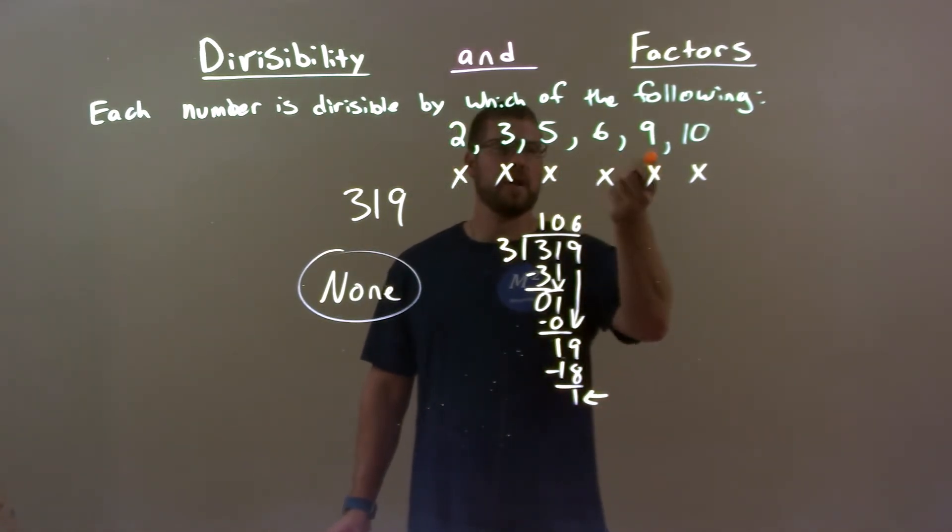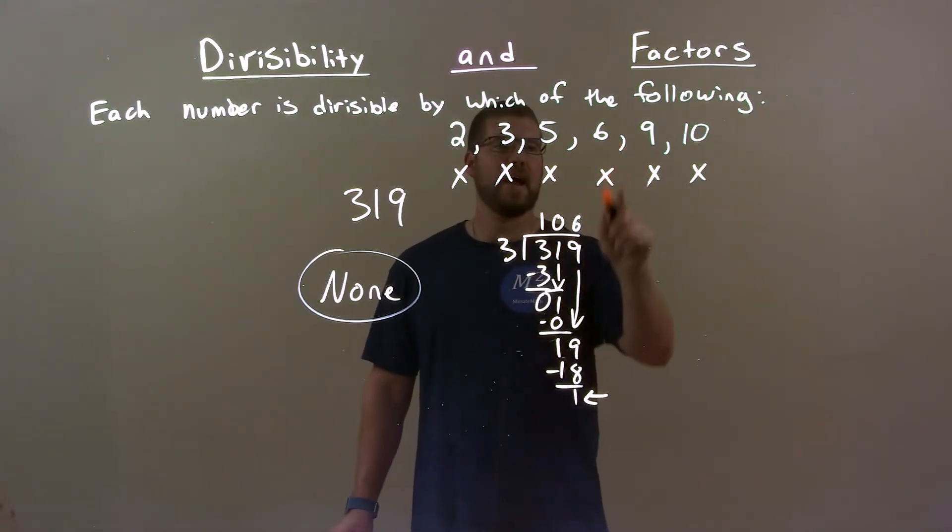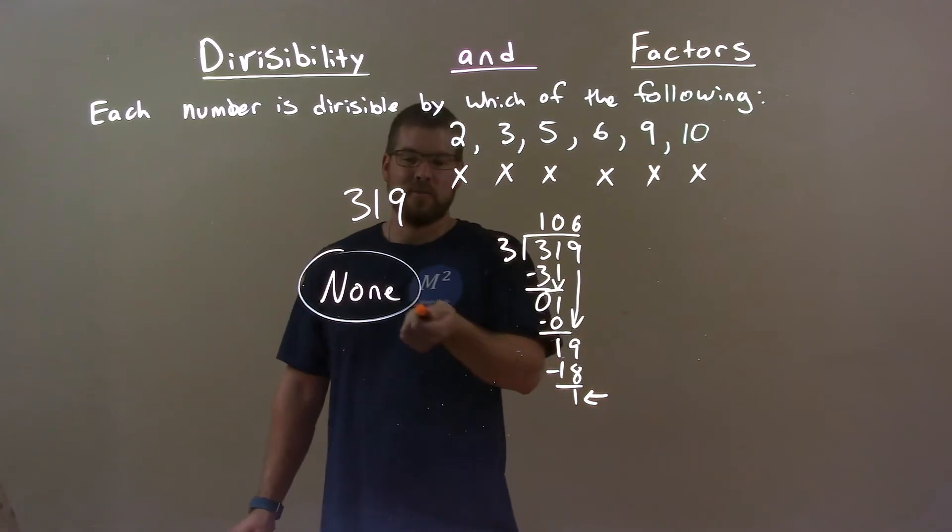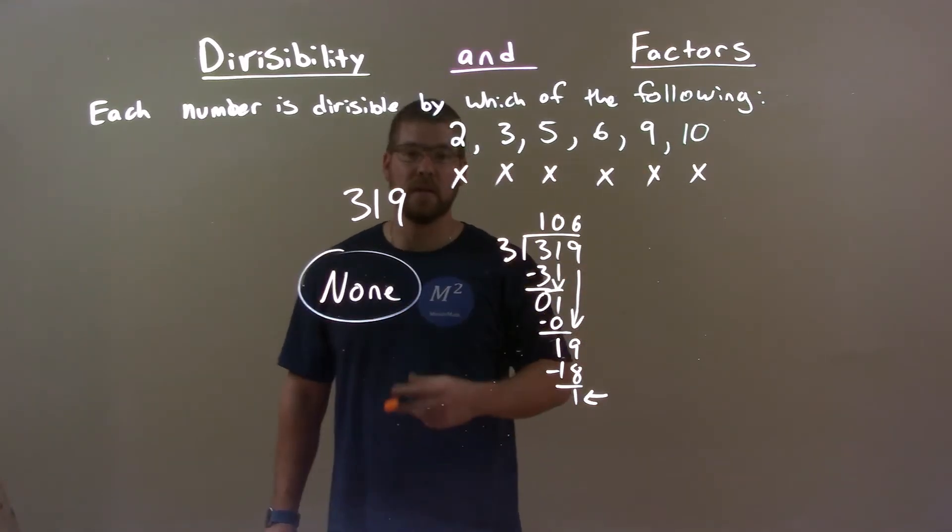And 9, well, 3 goes into 9 evenly. So, since that happens, there's no way 9 would work. So, our final answer is just none. None of these will go in evenly.